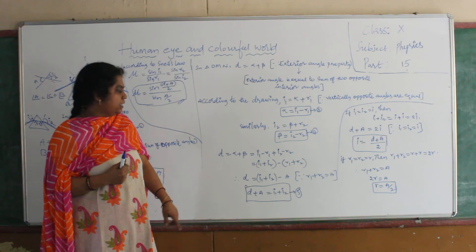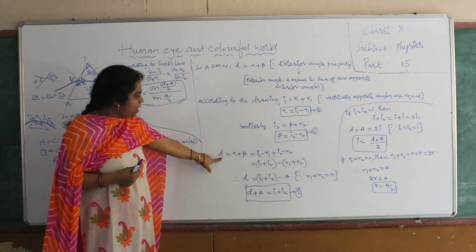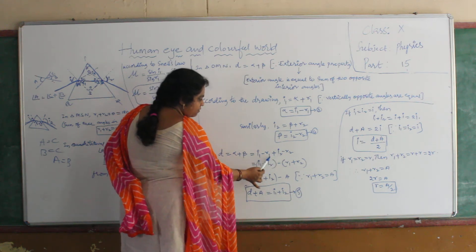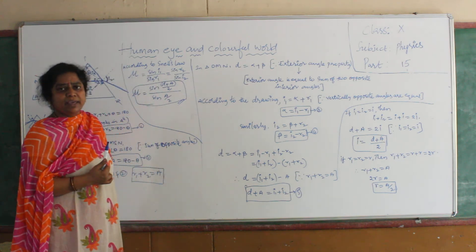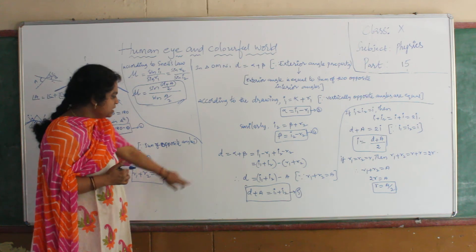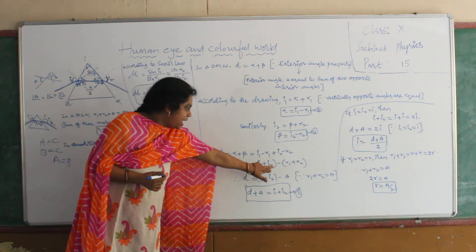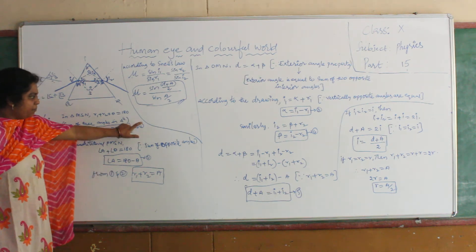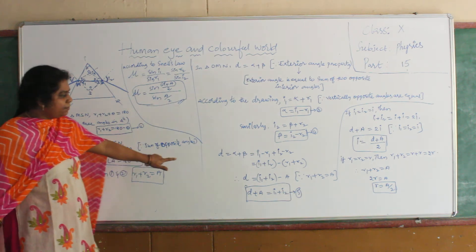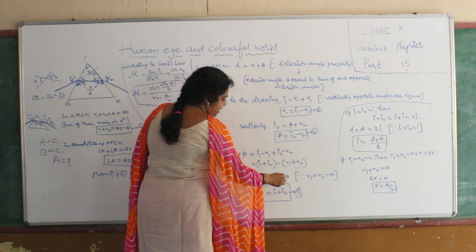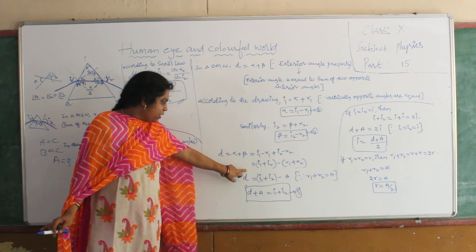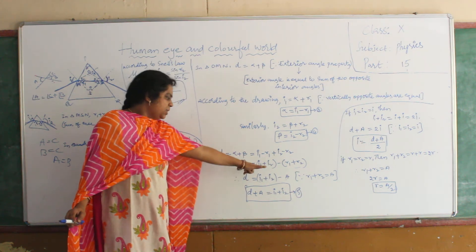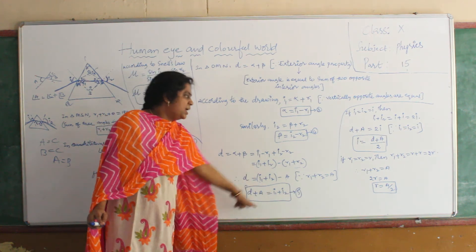Substituting these values into D equals alpha plus beta, we get D equal to (I1 minus R1) plus (I2 minus R2), which gives D equal to I1 plus I2 minus (R1 plus R2). Since R1 plus R2 equals A, substituting gives D equal to I1 plus I2 minus A, or equivalently D plus A equals I1 plus I2.